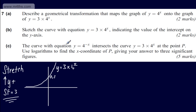In part C, it says the curve with equation y equals 4 to the minus x intersects the curve y equals 3 times 4 to the x at the point P. We're asked to use logarithms to find the x coordinate of P, giving that answer to three significant figures. The question carries five marks. If y equals 4 to the minus x and y equals 3 times 4 to the x, we can set those equal.